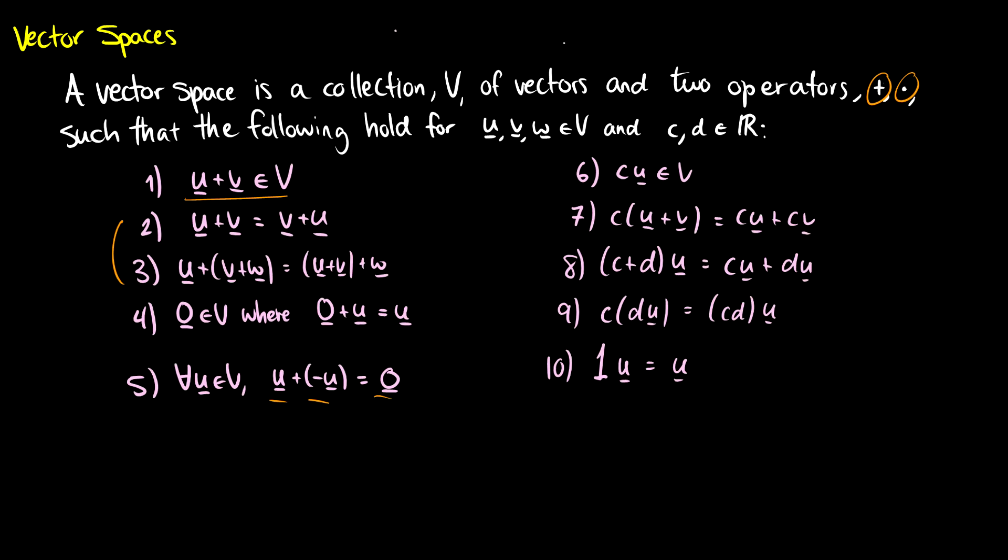We've got some distributive property here. So if we have a vector u plus v multiplied by c, it should be cu plus cv. If we multiply a vector by two scalars, so c plus d times u, we get cu plus du.